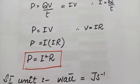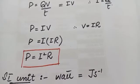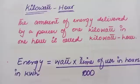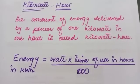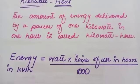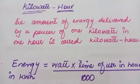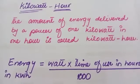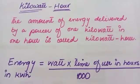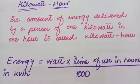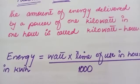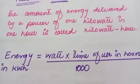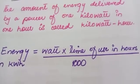Electrical energy is commonly consumed in very large quantities for which the joule is a very small unit. Hence a larger unit of electrical energy is needed, which is called the kilowatt-hour. The kilowatt-hour is defined as the amount of energy delivered by a power of one kilowatt in one hour. If one kilowatt of energy is used for a complete one hour, that equals one unit, called one kilowatt-hour.